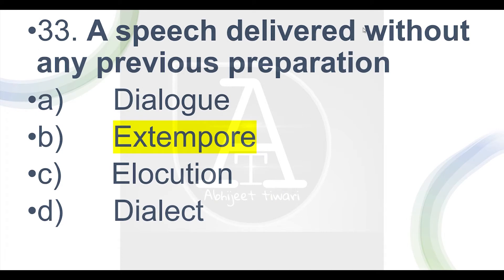Question 33: a speech delivered without any previous preparation. For example, if someone is at a ceremony and is suddenly called to the stage without any preparation — what do we call that? The correct option is B — 'extemporaneous' — a speech which is unprepared, delivered without prior preparation.